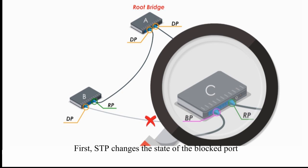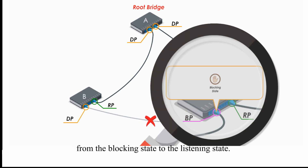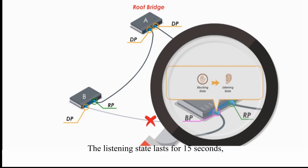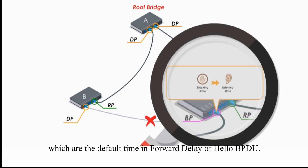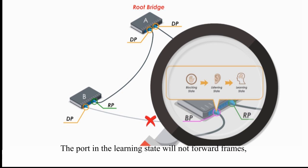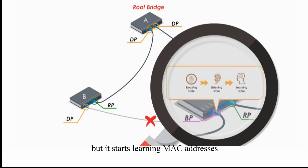First, STP changes the state of the blocked port from the blocking state to the listening state. A port in the listening state will not forward frames, but just listens for any change on the network. The listening state lasts for 15 seconds, which is the default time in the forward delay field of a Hello BPDU frame. After the listening state, the port transitions to the learning state. The port in the learning state will not forward frames, just like the listening state, but it starts learning MAC addresses and updating its MAC address table.